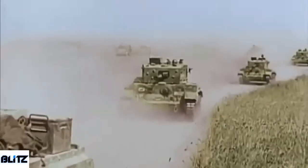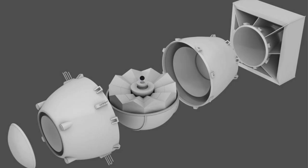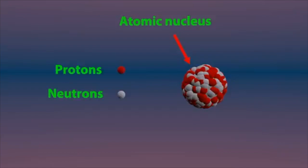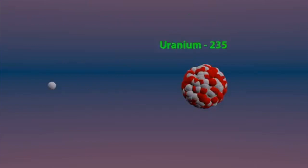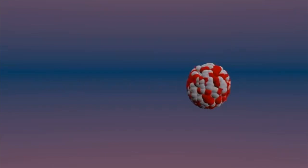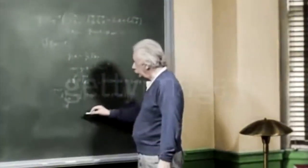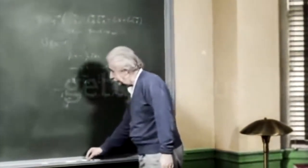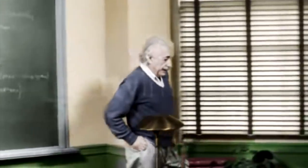But let's rewind a second and understand: what is an atomic bomb and how does it work? An atomic bomb is a powerful weapon that derives its destructive force from the release of nuclear energy. At its core, an atomic bomb involves a process of nuclear fission, where the nucleus of an atom is split, releasing an enormous amount of energy. This realization came from the work of brilliant scientists like Albert Einstein, who laid the theoretical groundwork for harnessing this immense power.